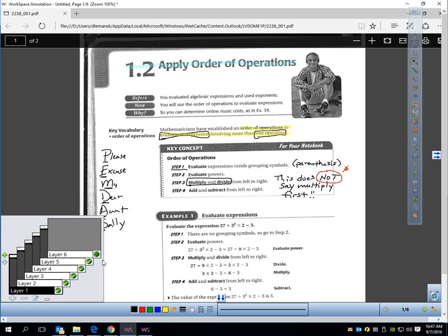You should always evaluate your powers next. That's where the E comes from, excuse. Excuse means exponents. So that takes us to step two. If you have exponents, that means you've got a power. You've got to do that next.